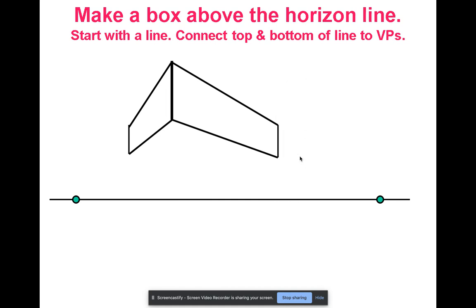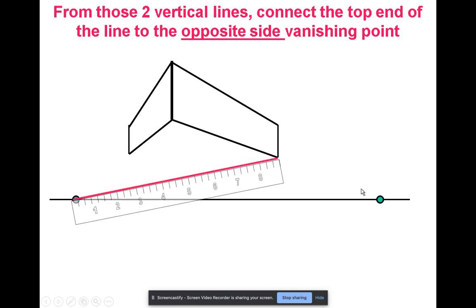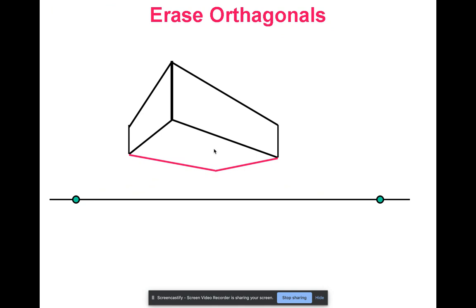And then we will take these corner points and we will go in the opposite direction back to our vanishing points to create the bottom of the box. So notice that we're seeing the corner, a side, a side, and the bottom of our box. And then we can erase our extra orthogonal lines.